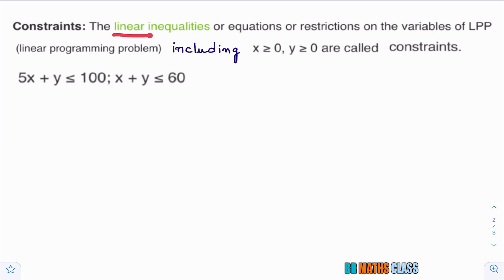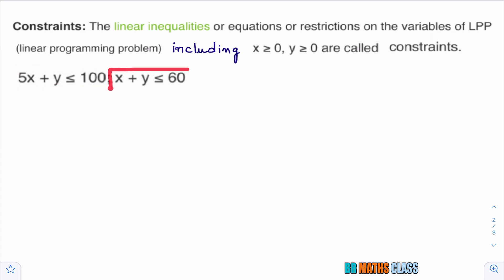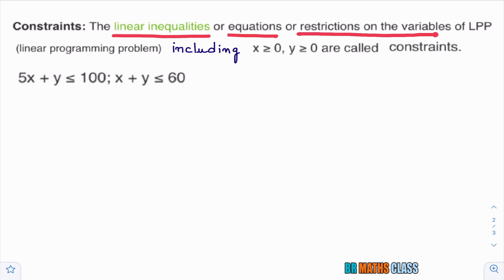What are constraints? Linear inequalities — while doing problems in this chapter, you will see linear inequalities such as 5x + y ≤ 100, where an inequality symbol is present. These are linear inequalities we get while doing linear programming problems. Linear inequalities are equations or restrictions on the variables of linear programming problems. Including x ≥ 0, y ≥ 0, which are known as non-negative constraints, because x ≥ 0, y ≥ 0 lies in the first quadrant.